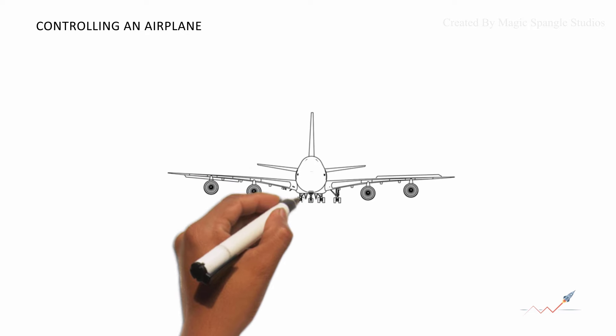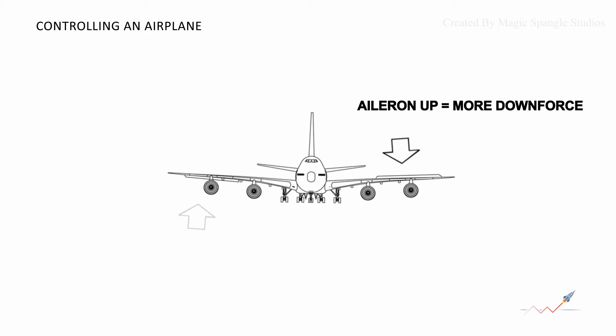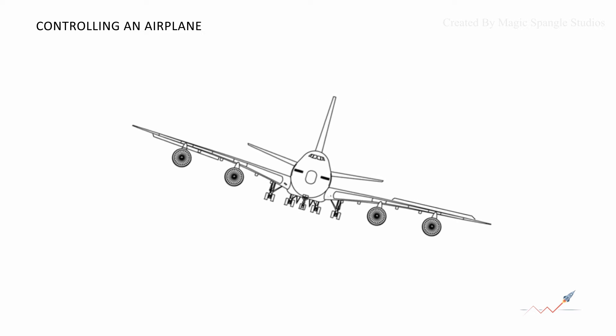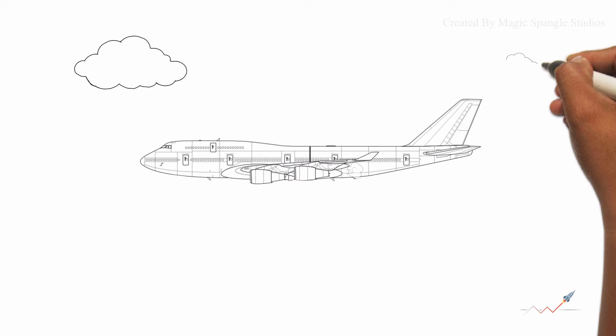If the pilot reverses the aileron deflection, right aileron down, left up, the right wing will lift up and the airplane will roll to the left. The next time you travel in an airplane, you'll know how it works.